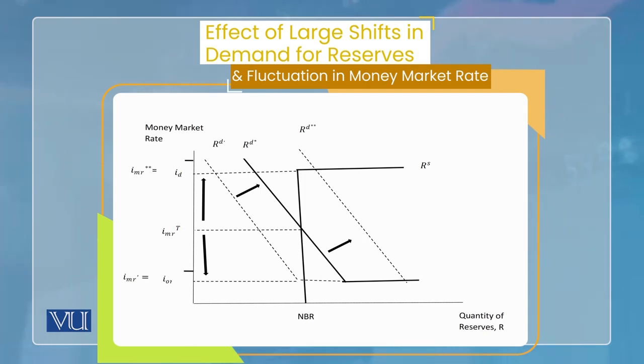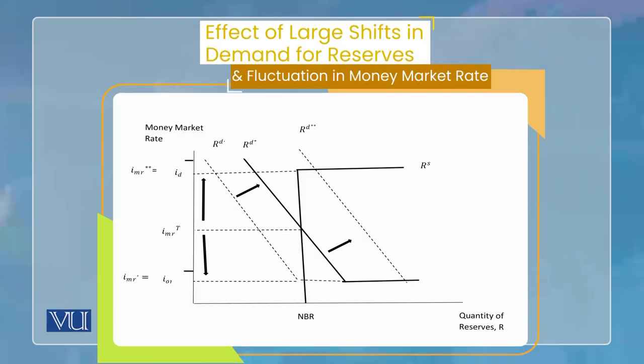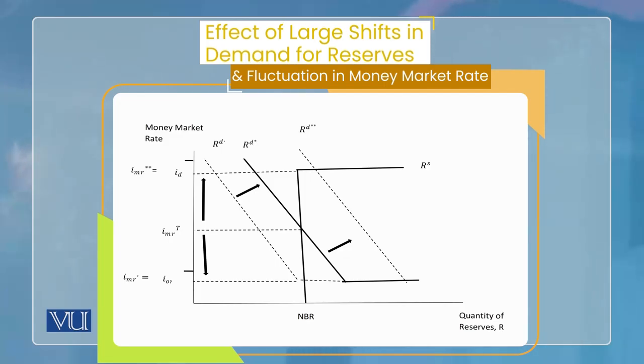مثلاً اگر financial crisis جیسی situation ہو جائے، حالات financially خراب ہو جائیں تو central banks بہت زیادہ excess reserves hold کرتے ہیں، تو reserves کی demand بڑھ جائے — curve right side پہ shift ہو گیا۔ اگر یہ corridor system نہ ہوتا تو جو equilibrium interest rate determine ہونا تھا وہ discount rate سے کہیں اوپر جا کے ہوتا۔ لیکن چونکہ corridor system ہے اور interest rate discount rate سے اوپر نہیں جا سکتا، تو discount rate کے اوپر ہی نیا equilibrium بنا۔